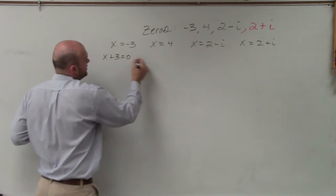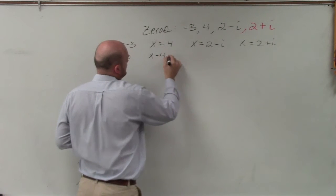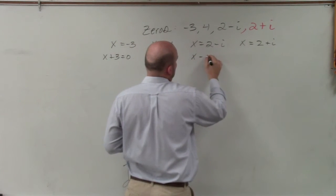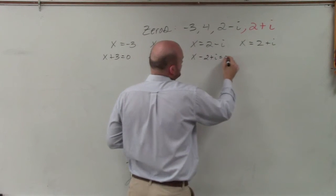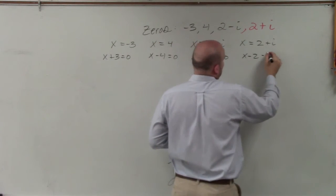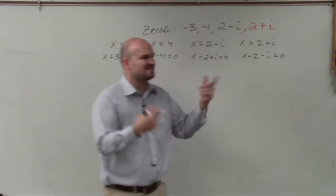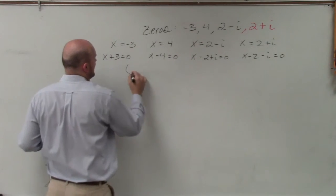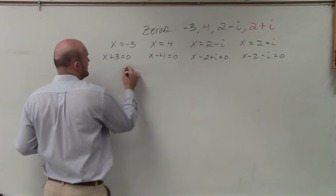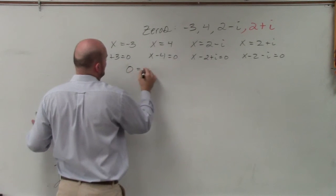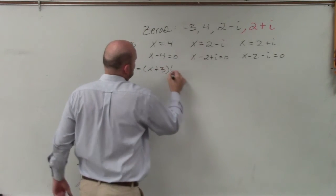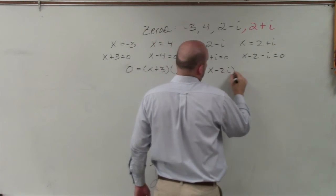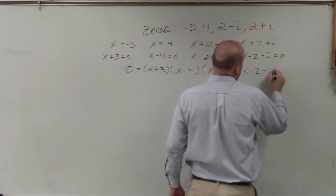Without showing my work here, it's going to be x minus 2 plus i equals 0, x minus 2 minus i equals 0. I'm just setting them all equal to 0. Therefore, if I was going to factor that out, I'd have 0 equals (x+3)(x-4)(x-2+i)(x-2-i).